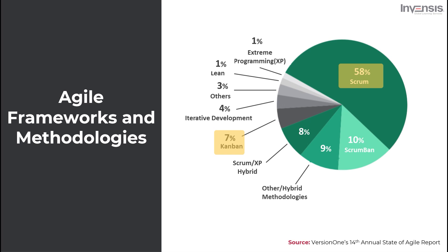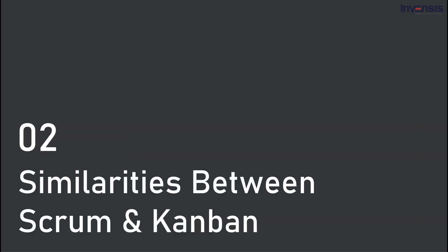Because Scrum and Kanban both fall under the Agile framework umbrella, many people confuse them or think they're the same thing, which is definitely not true. They do share a few common characteristics — after all, they are both Agile methodologies. So you can expect them to have certain similarities. Let's see what those similarities are.